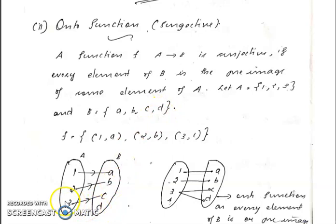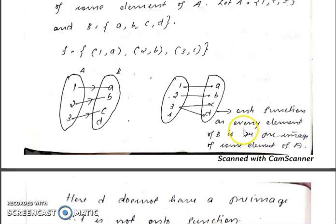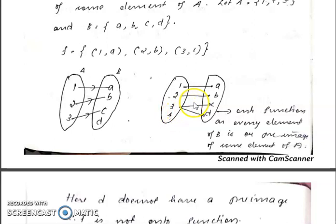In a second example: 1 maps to A, 2 maps to B, 3 maps to C and D. So the pre-image of A is 1, pre-image of B is 2, pre-image of C is 3, pre-image of D is also 3. Every element of B has a pre-image, so this is an onto function.